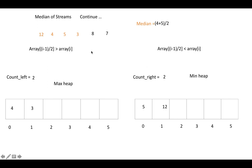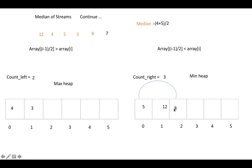Next, element 8 arrives. We check against the max heap root 4 — 8 is greater, so we store it into the min heap. We check the min heap property with its parent 5: since 5 is less than 8, the property is satisfied and no swapping is needed. Count_right is now one more than count_left, so the median is the root element of the min heap, which is 5.